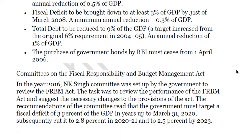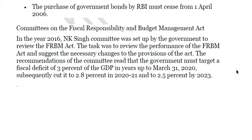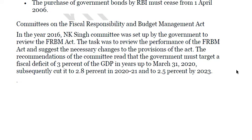In 2016, the NK Singh Committee was set up by the government to review the FRBM Act. The task was to review the performance of the Act and suggest necessary changes to its provisions. The committee recommended that the government must target a fiscal deficit of 3% of GDP up to March 31, 2020, subsequently cut to 2.8% in 2020-21, then 2.5% by 2023. The fiscal deficit target of the 2019-20 budget was 3.3%.